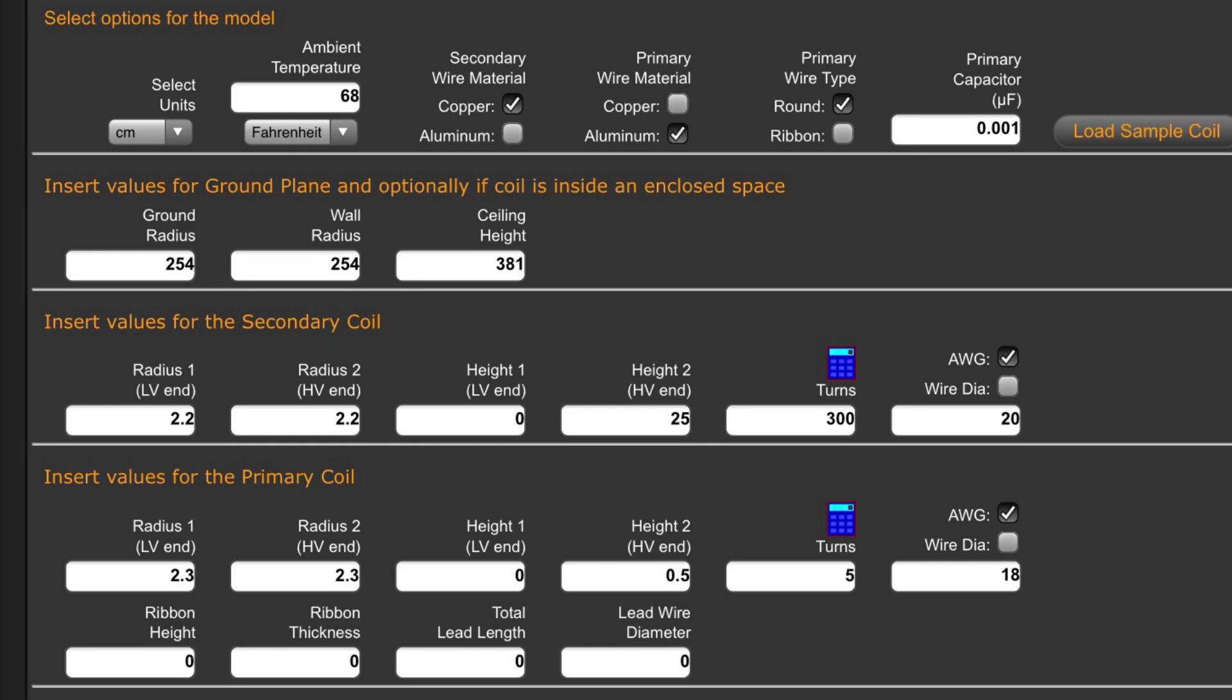Below the heading secondary coil we have the dimensions of the secondary coil, or the coil that has the copper windings around it. Its dimensions are going to be the same as three toilet roll tubes stacked one on top of the other. And under the heading primary coil we have the dimensions of the primary coil, which will simply be some fatter wire wrapped five turns around the secondary coil. And this is basically all the dimensions we need to know for our Tesla coil.